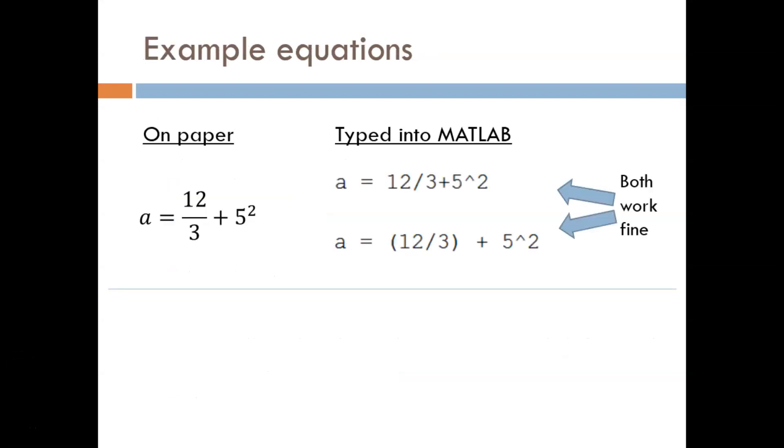On this slide, we will compare how two equations might look on paper versus how they would look typed into code. First, examine the equation for a. Both of the code examples would be acceptable. In the top one, due to order of operations, the 5 squared gets evaluated first, then the 12 divided by 3, then they are added together.